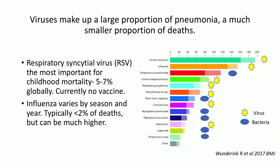Viruses make up a large proportion of pneumonia numerically, but a much smaller proportion of deaths. The most important childhood viral cause globally is respiratory syncytial virus (RSV), probably causing 5–7% of child pneumonia deaths. We currently have no vaccine for RSV — a very prominent vaccine target. Influenza can cause viral pneumonia, varying by season and by year, with some strains much more virulent and more likely to cause pneumonia than others.